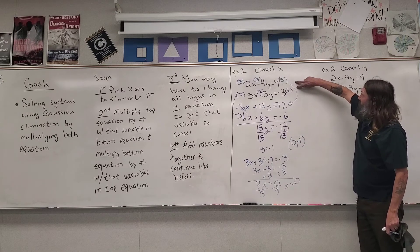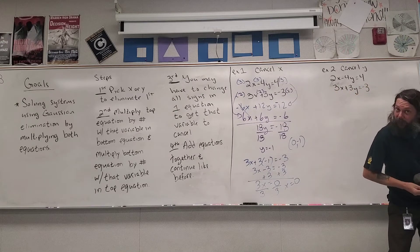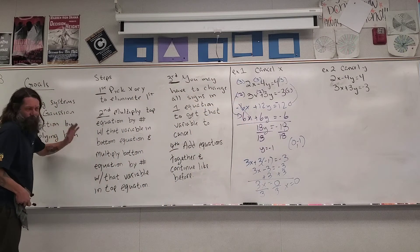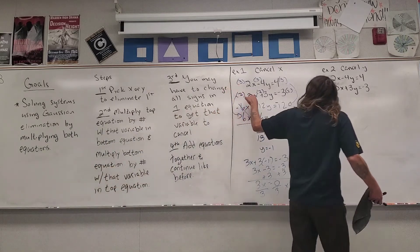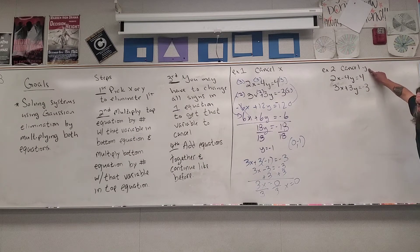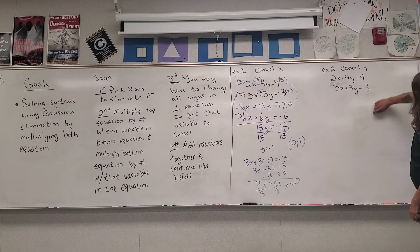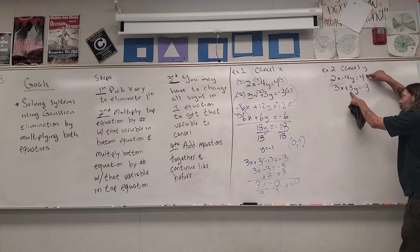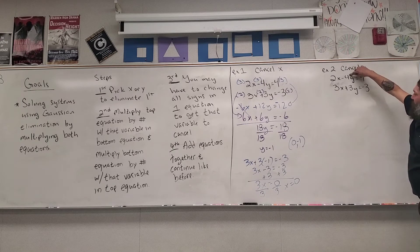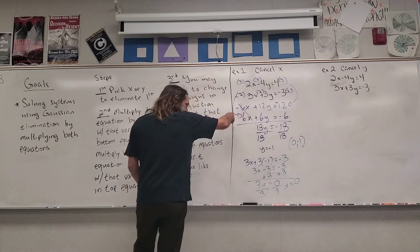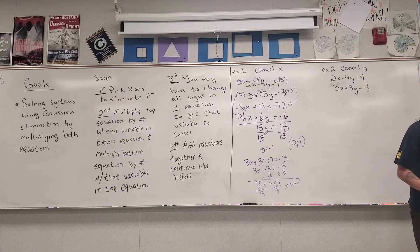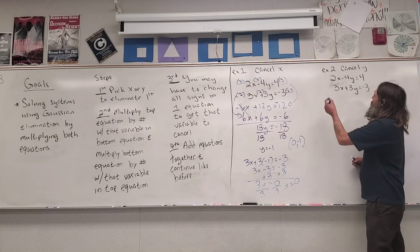I wanted to do the problem once by canceling x. Now I want to do the problem again by canceling y, just so you can see there's really not a wrong way to do this. In the second version of the problem, I'm going to multiply everybody in the top equation by 3, because that's who y is with in the bottom equation. And I'm going to multiply everybody in the bottom equation by 4, because that's who is with y in the top equation. Again, I'm just going to multiply by the positive number and not worry about signs.